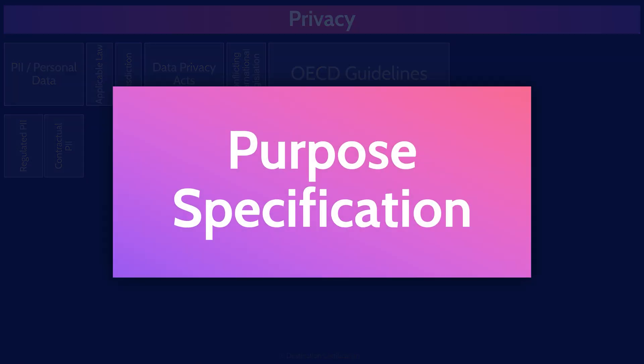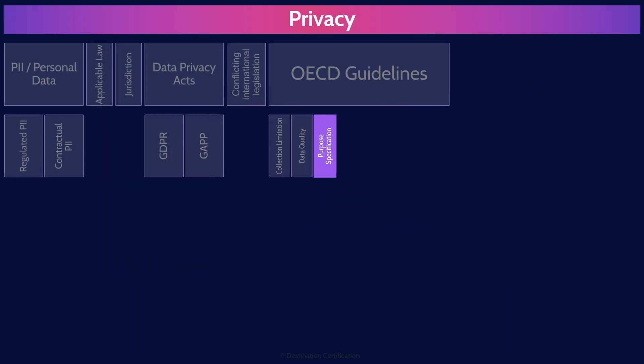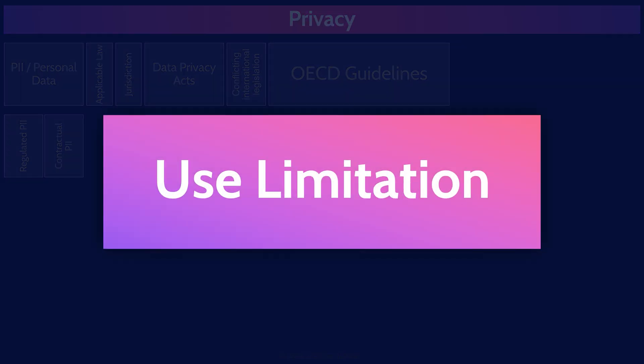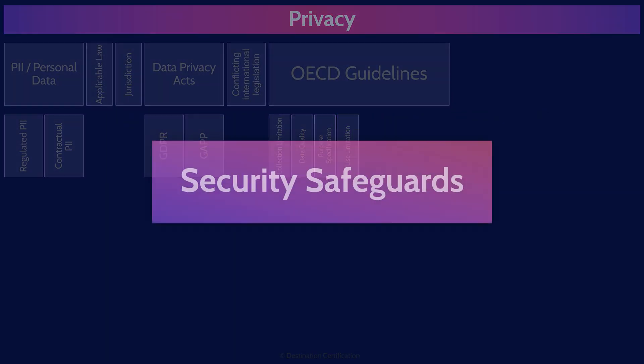The purpose specification principle means the purposes for which PII is collected should be specified at the time of collection — organizations should clearly articulate what the collected PII will be used for. The use limitation principle means PII should only be used or disclosed based on the purpose for which it was collected, with consent of the data subject or authority of law. So purpose specification means say why you're collecting it, and use limitation means only use it for those purposes. Security safeguards means PII should be protected by reasonable security controls against loss, unauthorized access, destruction, use modification, etc.